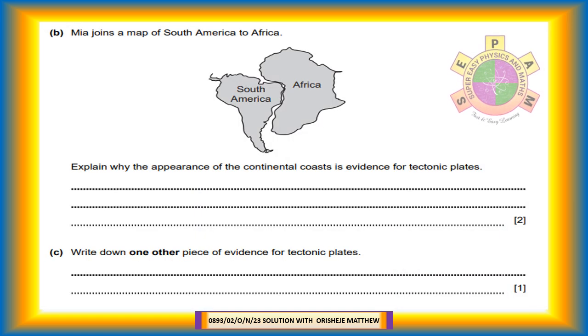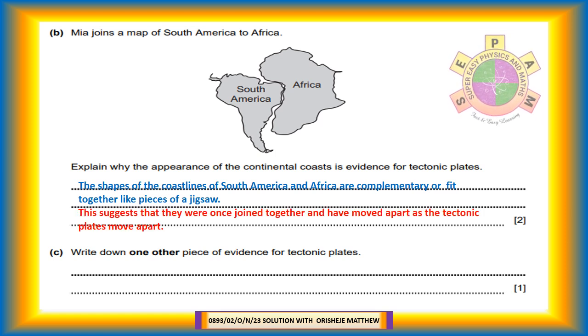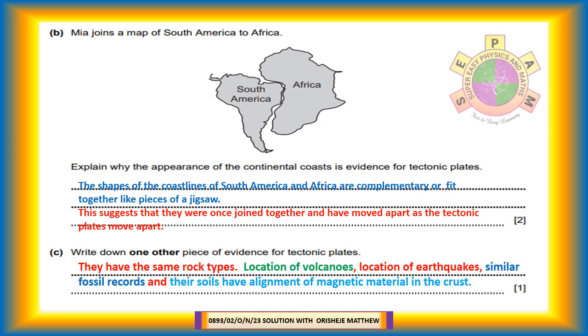Question 9b: Mia joins a map of South America to Africa. Explain why the appearance of the continental coasts is evidence for tectonic plates. The shapes of the coastlines of South America and Africa are complementary, that is to say the coastlines fit together like pieces of a jigsaw. The fitting of their coastline suggests that they were once joined together and have moved apart as the tectonic plates move apart. Question 9c: Write down one other piece of evidence for tectonic plates. Evidences for existence of tectonic plates are the location of volcanoes, location of earthquakes, fossil records, and alignment of magnetic material in the crust.